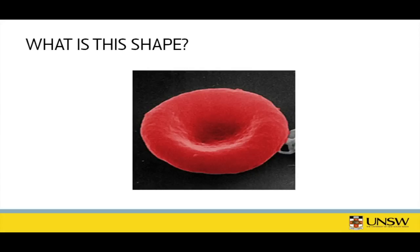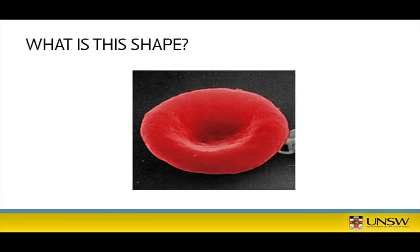This is a red cell done with very high magnification using an instrument called an electron microscope. The shape is sometimes considered like a doughnut, except that the middle hasn't been punched out — like a Krispy Kreme doughnut with a thin rim of pastry filling up the circle. This creates quite a large surface area in relation to the volume of the cell, so that oxygen can quickly diffuse out.